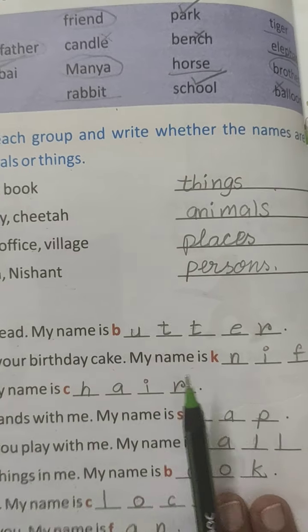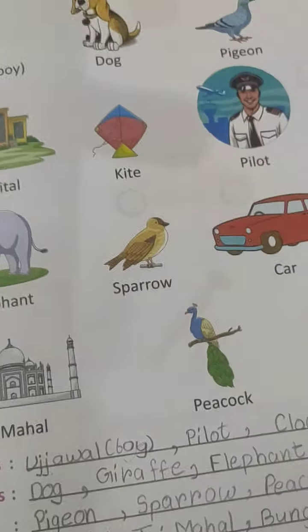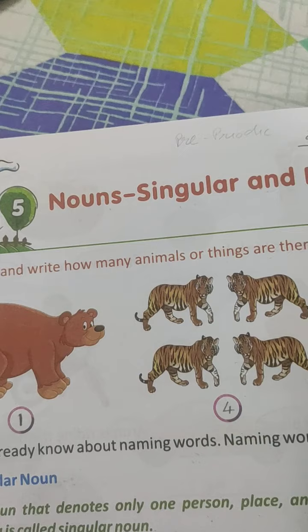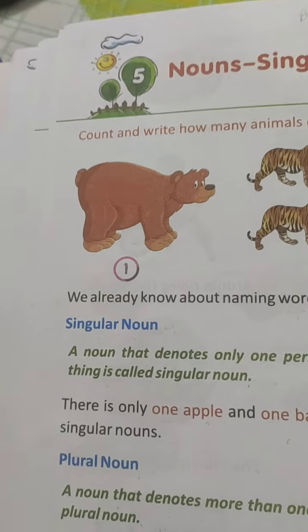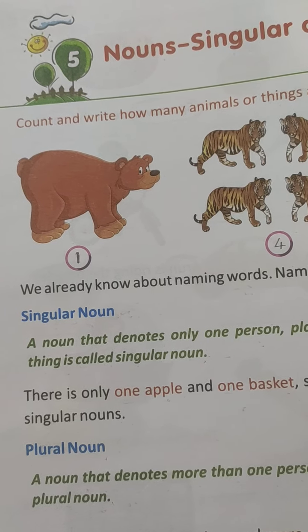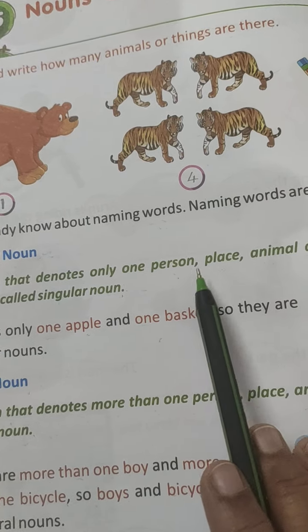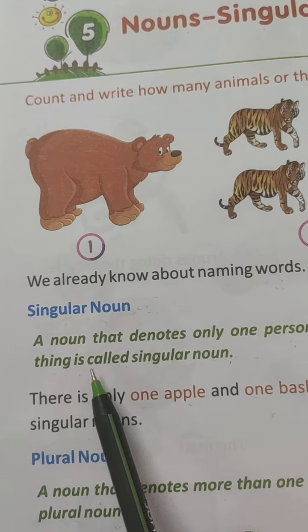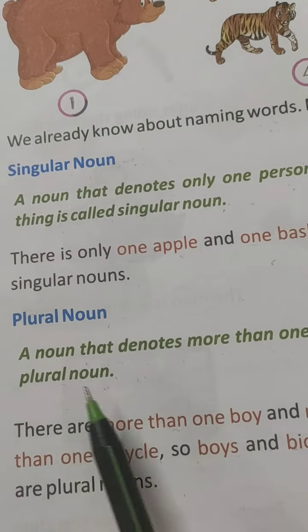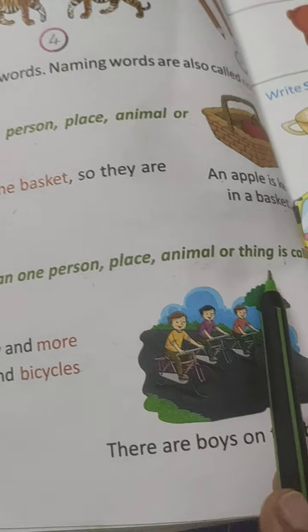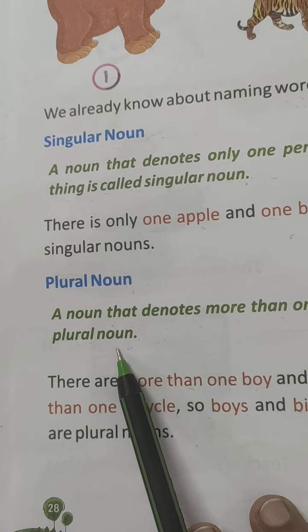We are doing these exercises. Now come to the next one. Lesson 5: Nouns — singular and plural. Singular means one and plural means more than one. A noun that refers to only one person, place, animal or thing is called a singular noun. A noun that refers to more than one is called a plural noun.